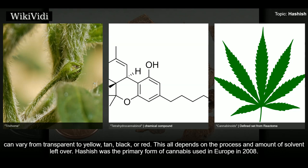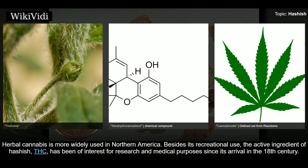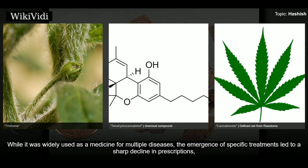Hashish was the primary form of cannabis used in Europe in 2008, while herbal cannabis is more widely used in North America. Besides its recreational use, the active ingredient THC has been of interest for research and medical purposes since its arrival in the 18th century. While it was widely used as a medicine for multiple diseases, the emergence of specific treatments led to a sharp decline in prescriptions.